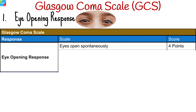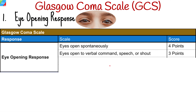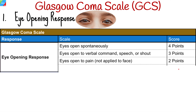For eye-opening response, the highest points that can be scored is 4. Start by observing the patient. If the patient is opening their eyes spontaneously, the score is 4. If the patient does not open their eyes on their own, you must speak to them. If the patient's eyes open in response to verbal stimuli, they score 3 points. If the patient does not open their eyes in response to sound, proceed to assessing eye-opening to pain. This can be achieved through applying pressure to the patient's fingertips, pressing one of the patient's trapezius muscles, or applying pressure to the patient's superorbital notch. If the patient's eyes open in reaction to a painful stimulus, they score 2 points.